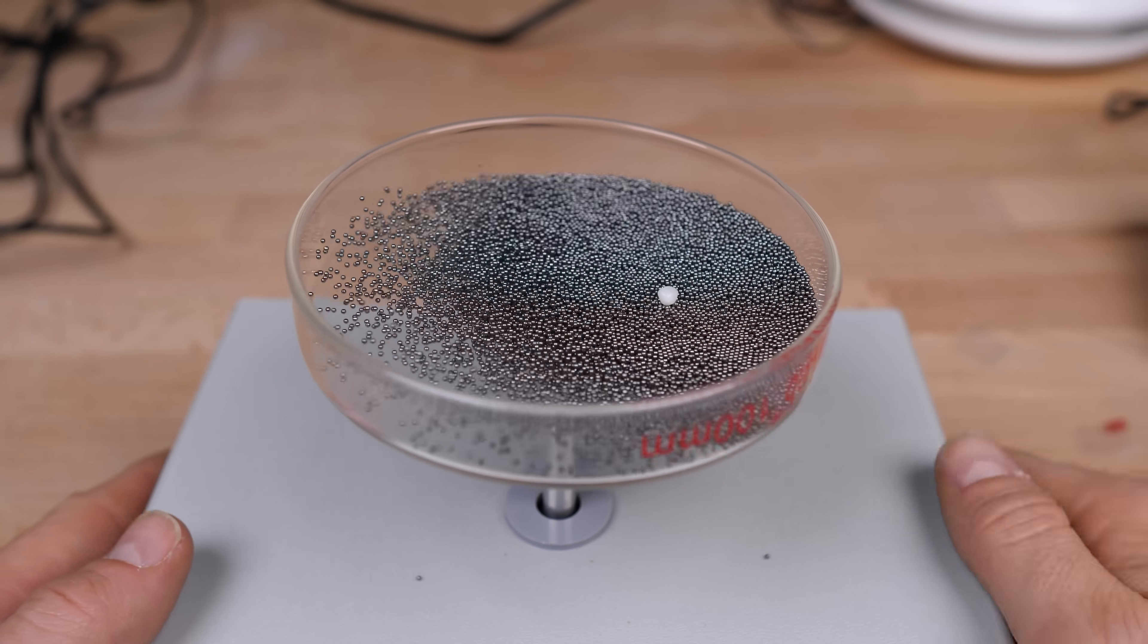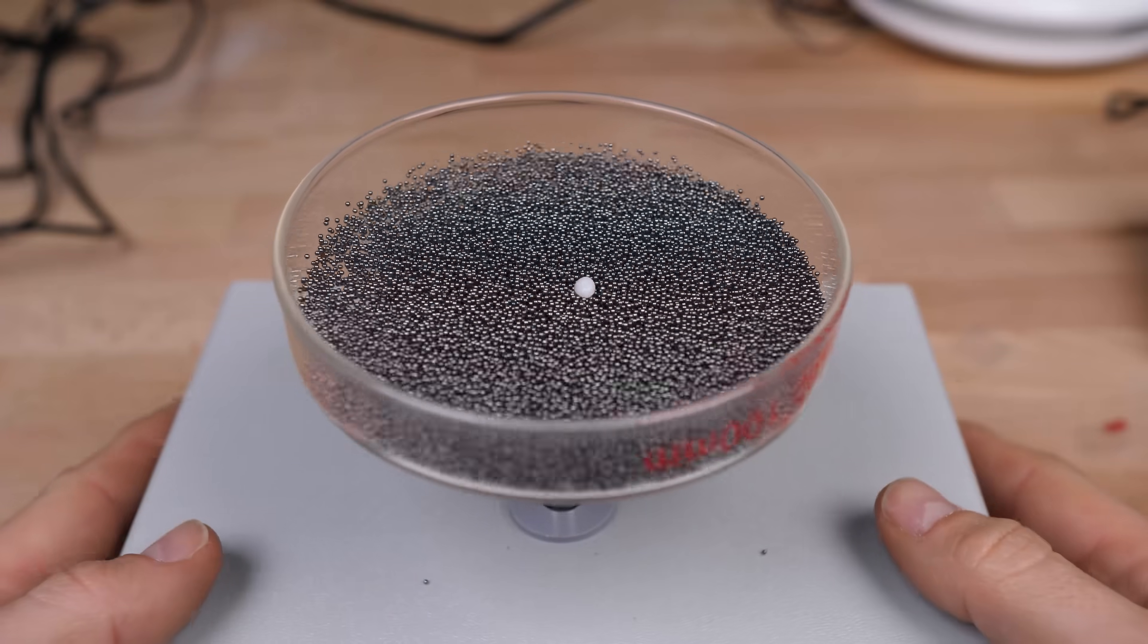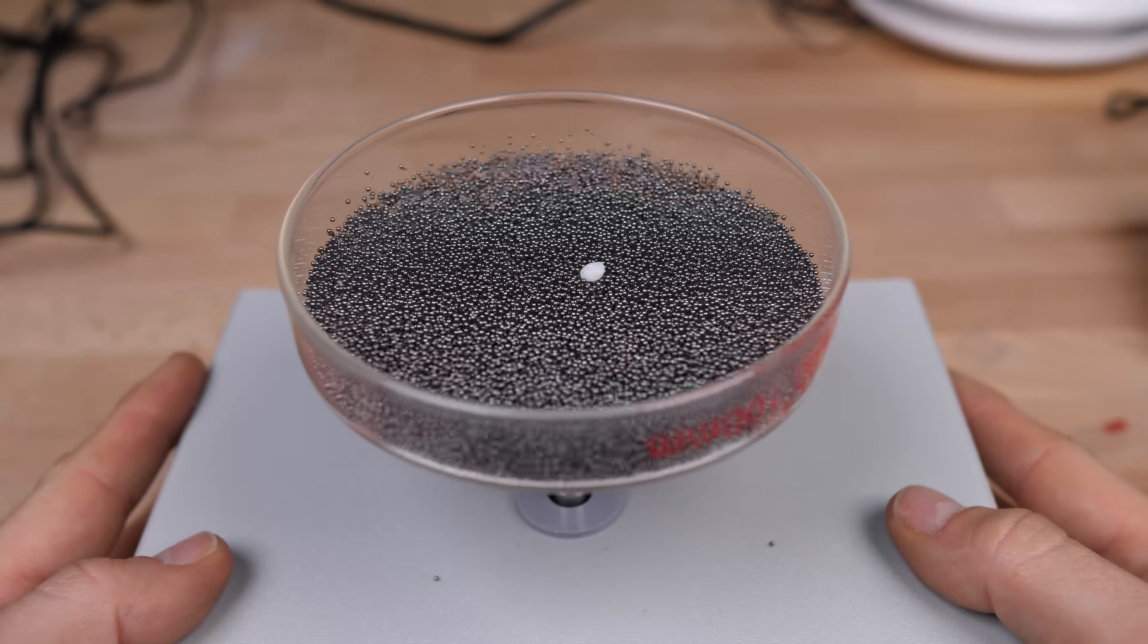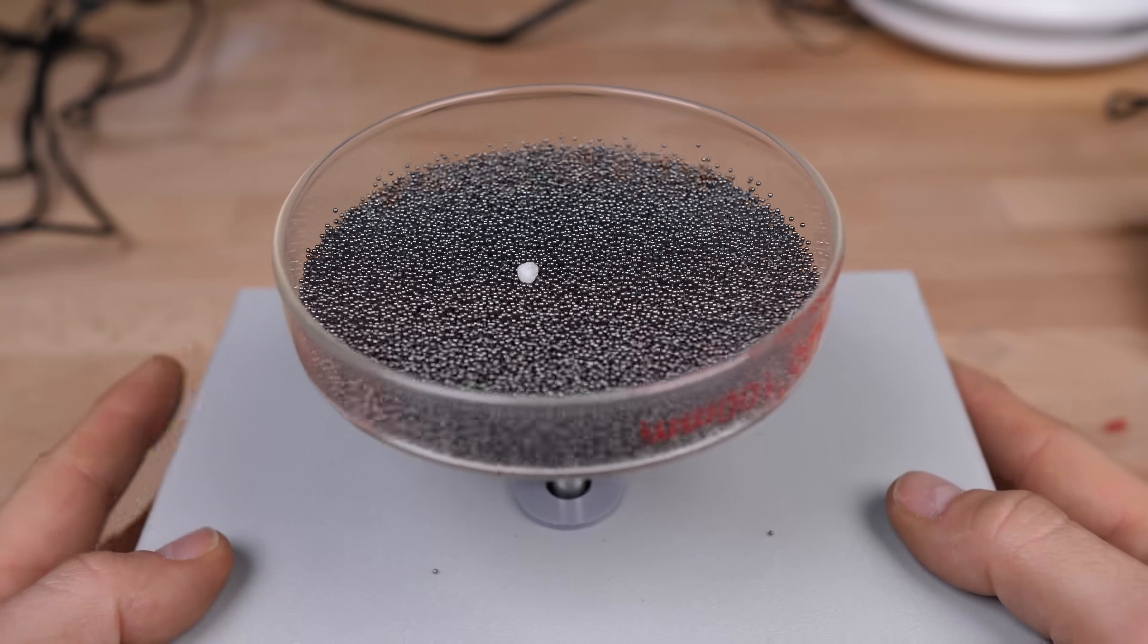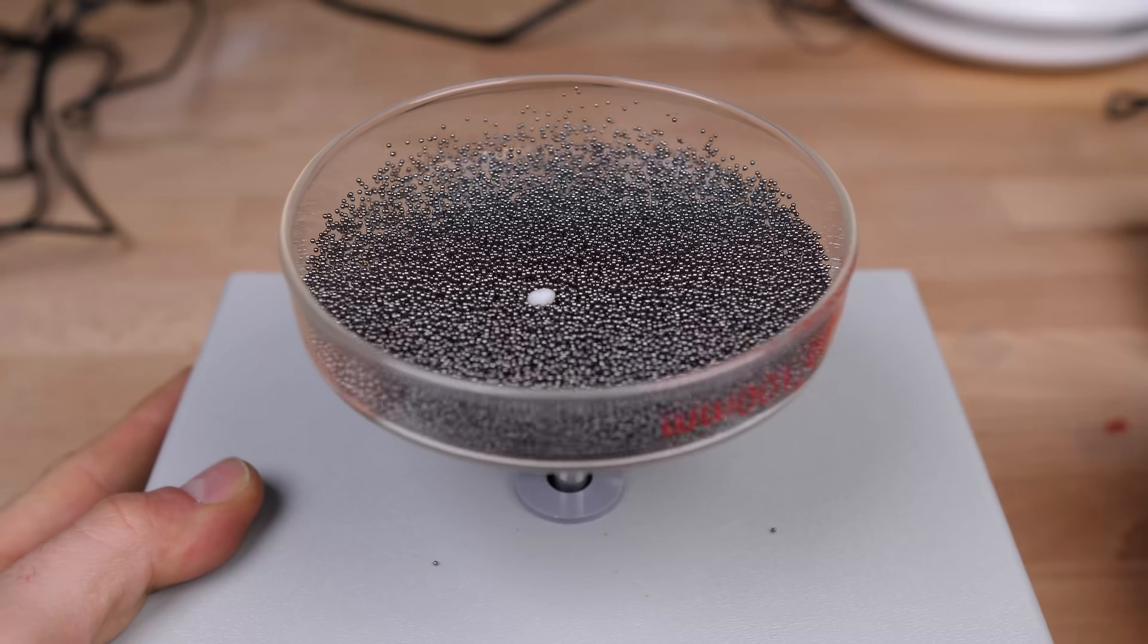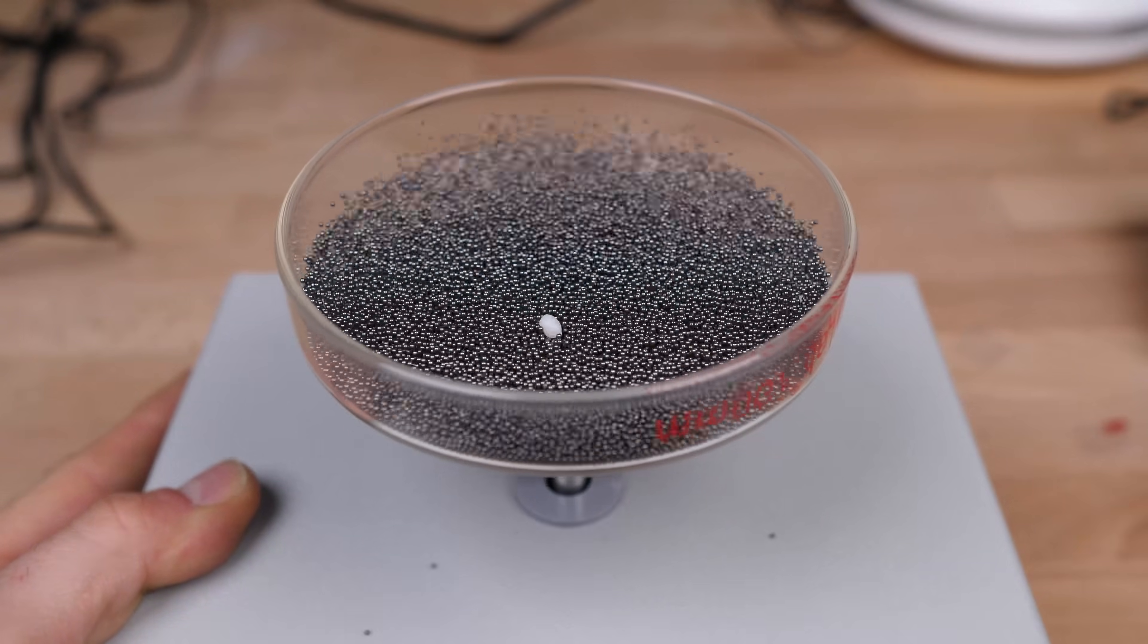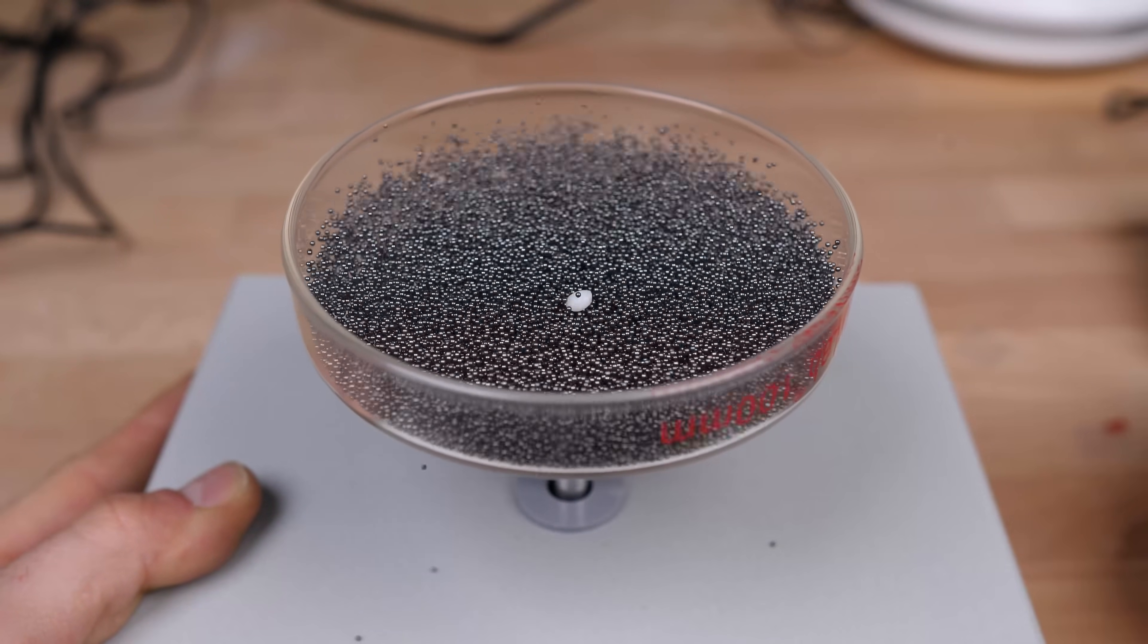What you're seeing here is a small model of that process. I have a dish full of tiny ball bearings that I'm jiggling to simulate the motion of, for example, water molecules. And this plastic bead is like a particle suspended in that liquid. And you can see how the individual collisions with the ball bearings cause the plastic particle to move around. But because the motion of the plastic beads is averaged over lots of little collisions, the motion of the bead is a lot less dramatic than the individual motions of the ball bearings, just like with real Brownian motion.